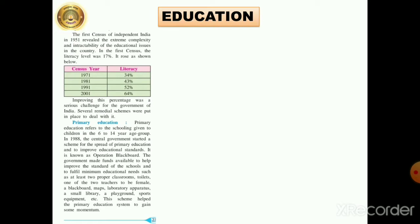First, we are going to see the census, that is a counting of the literacy percentage. Here on the screen you have a table. Census here means counting done in those years — that is 1971, 1981, 1991, and 2001. Counting was done in these years; this is a 10-year period.